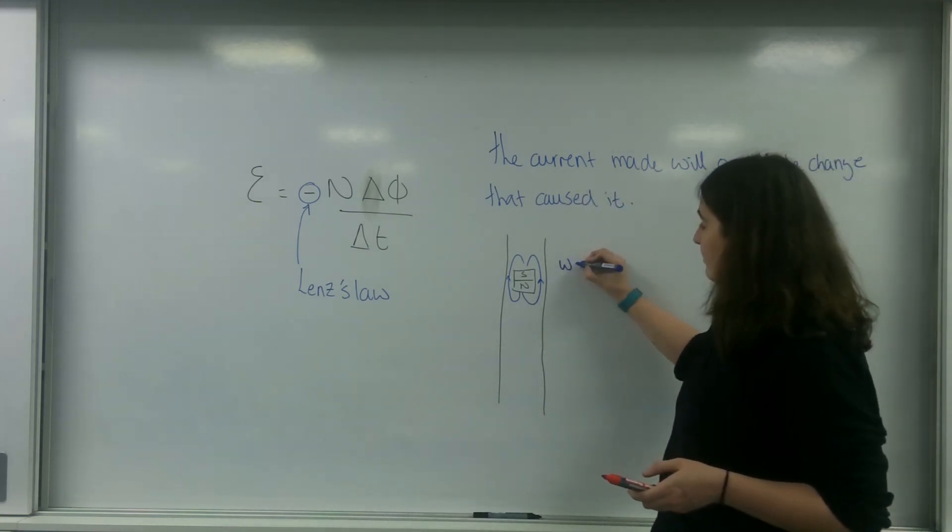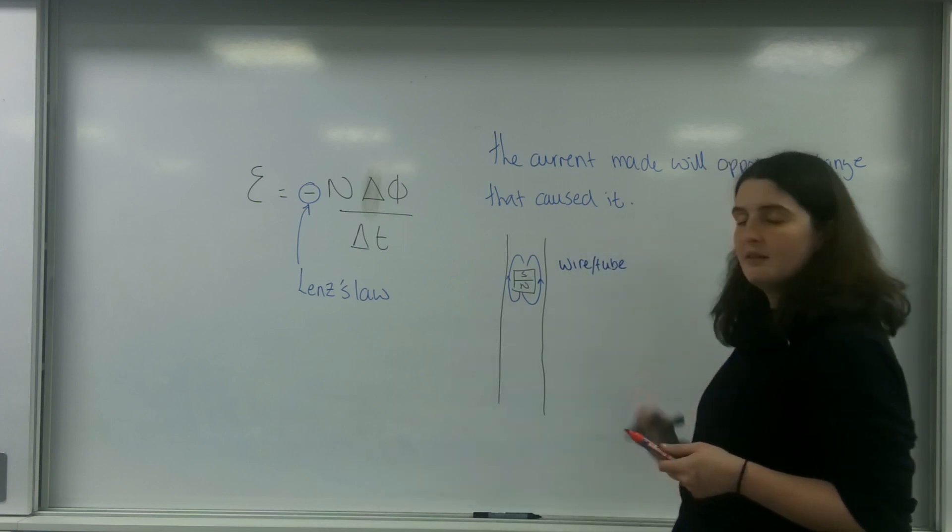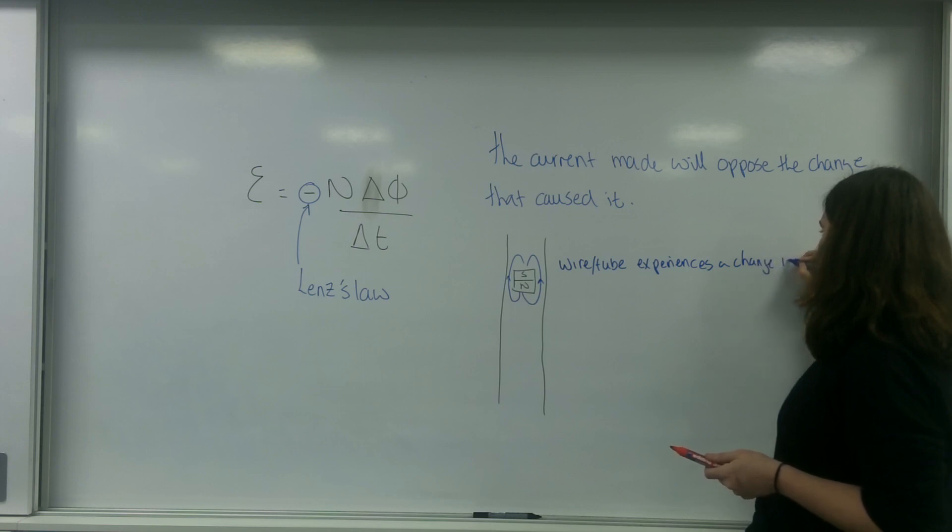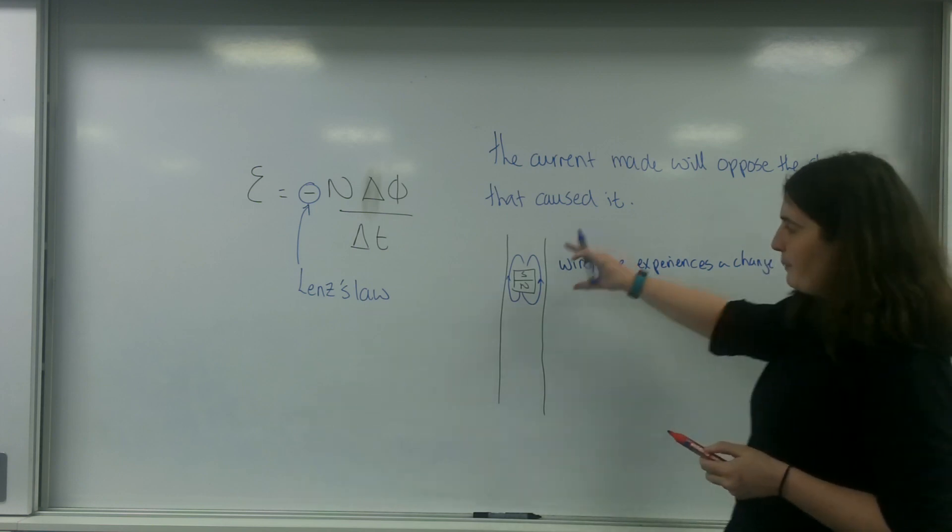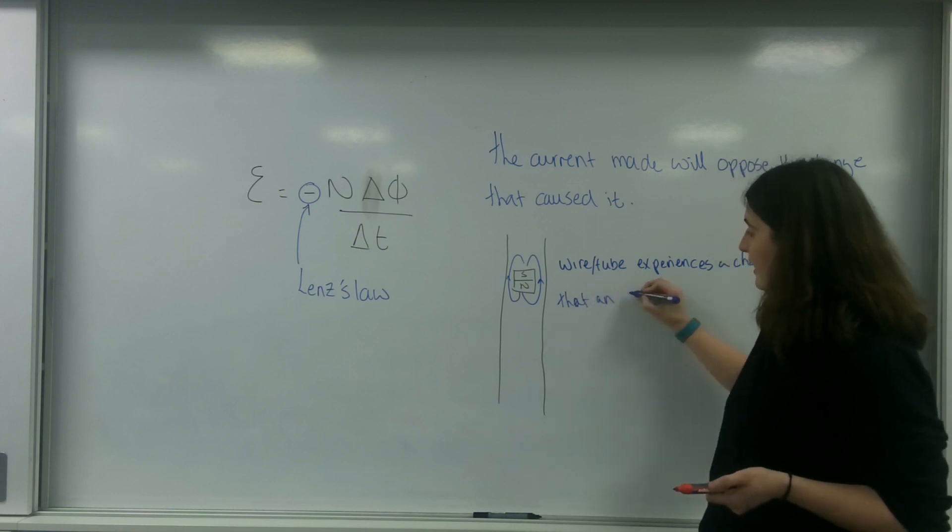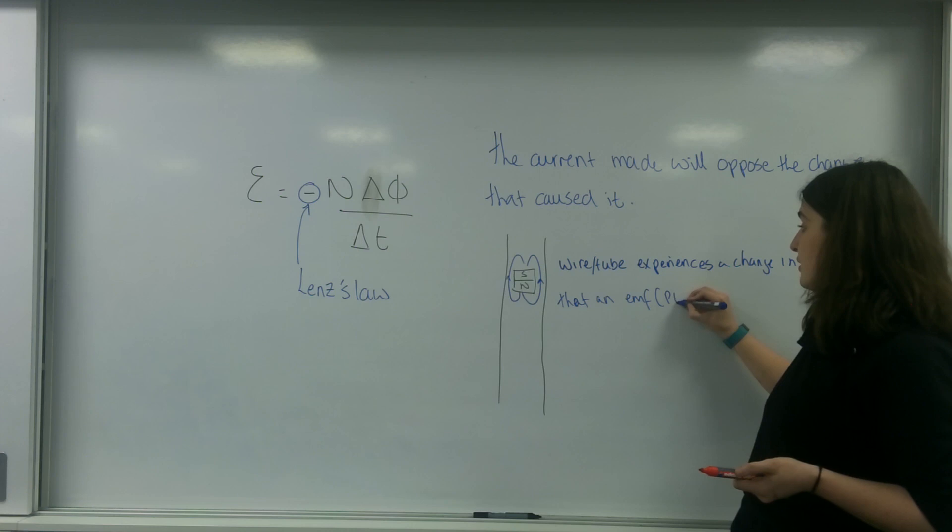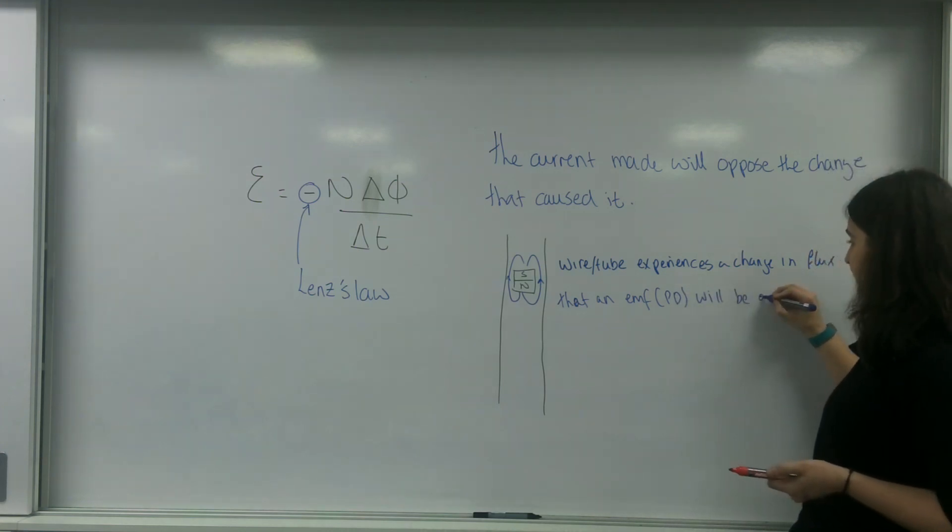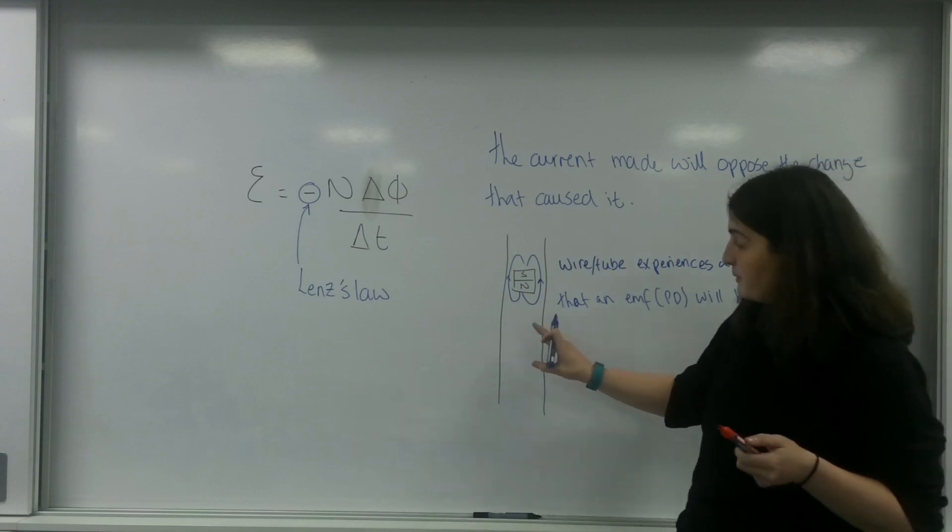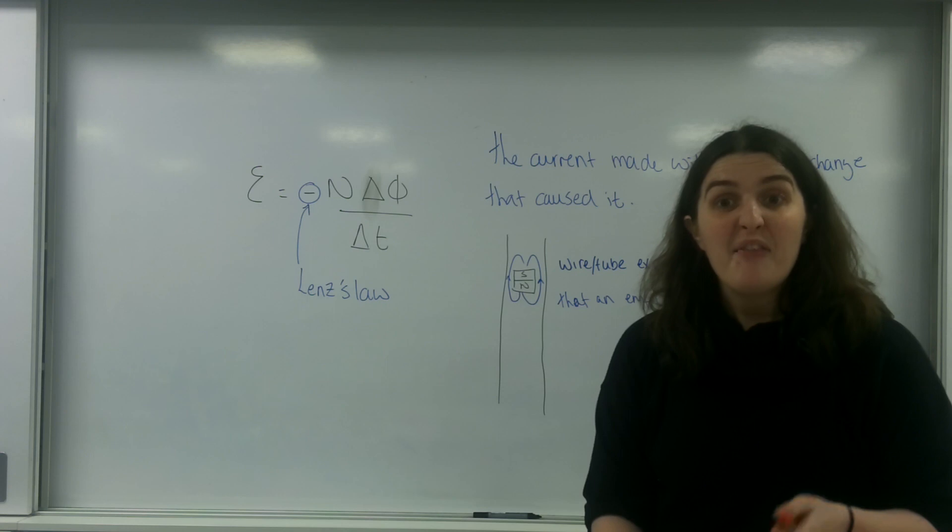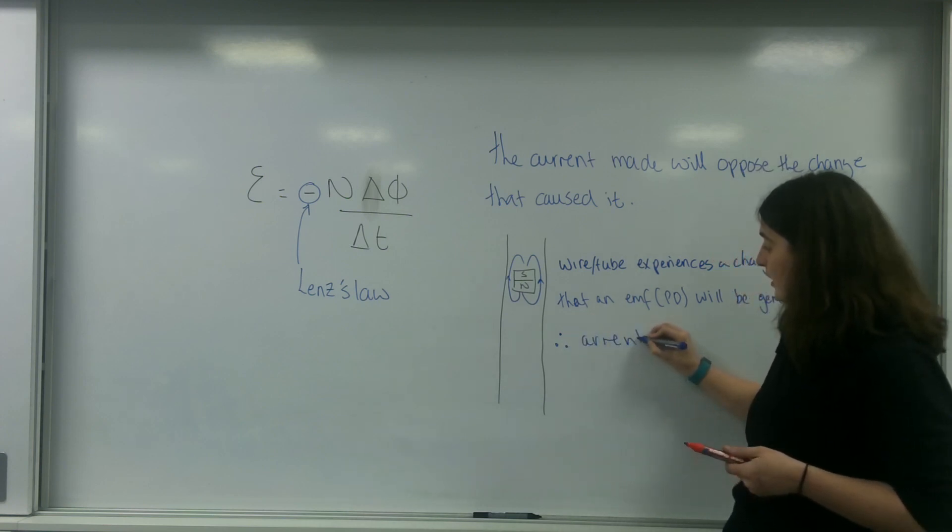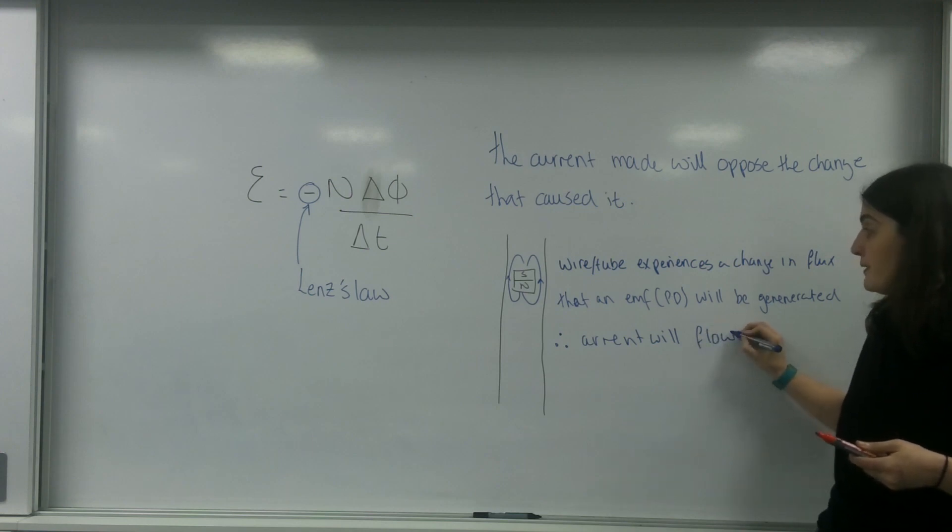So the wire or the tube experiences a change in flux. And because this is happening over time, this means that an EMF or a potential difference will be generated. This means there's going to be a potential difference inside this copper tube. This means current will start to flow. Therefore, current will flow because there is a potential difference, because there is an electric field made.